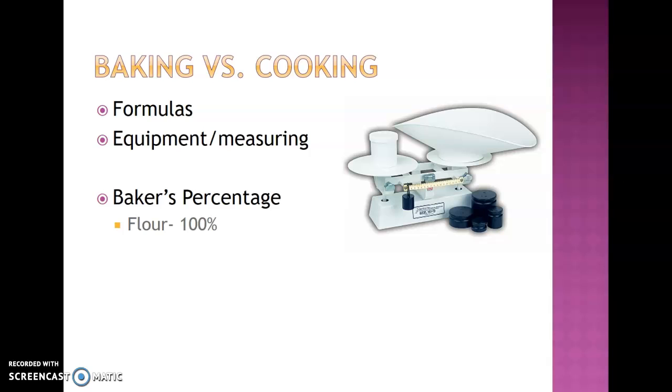What this does is it puts everything in ratios instead of actual amounts. The flour is always 100%. So if sugar is 200%, that means if you had 8 ounces of flour, you would have a pound of sugar.